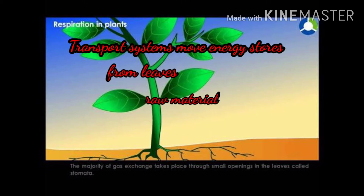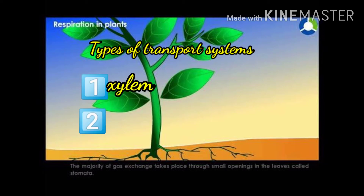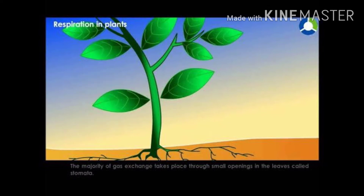Plant transport systems will move energy stores from leaves and raw materials from roots. These two pathways are constructed as independently organized conducting tubes — one the xylem and the other the phloem. You have studied about these two complex tissues and their components in detail in your ninth class.